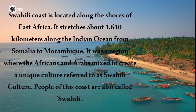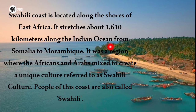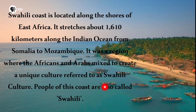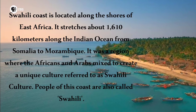The Swahili Coast is located along the shores of East Africa, stretching about 1,060 kilometers along the Indian Ocean from Somalia to Mozambique. It was a region where Africans and Arabs mixed to create a unique culture called Swahili culture, and the people of this coast are called Swahili.